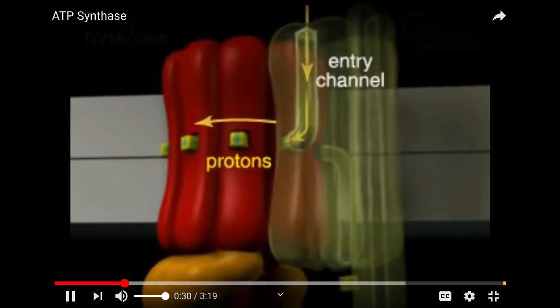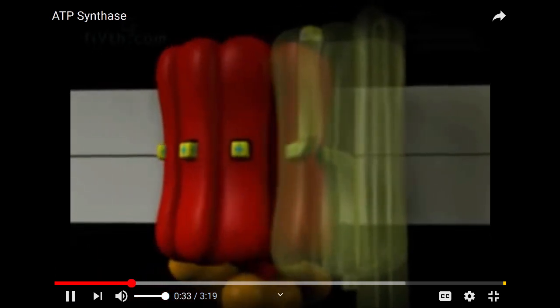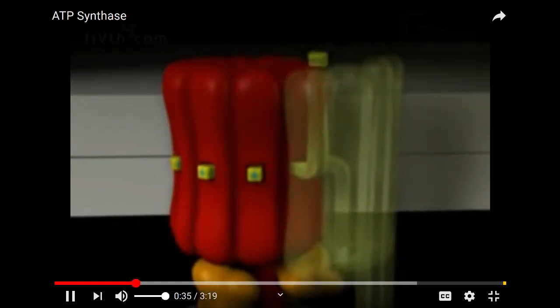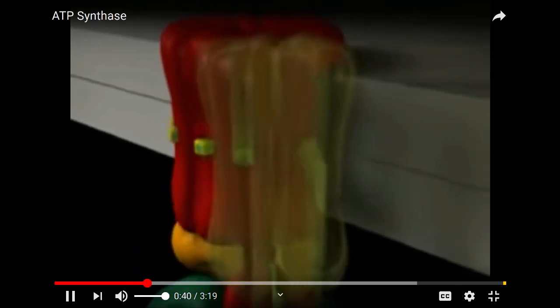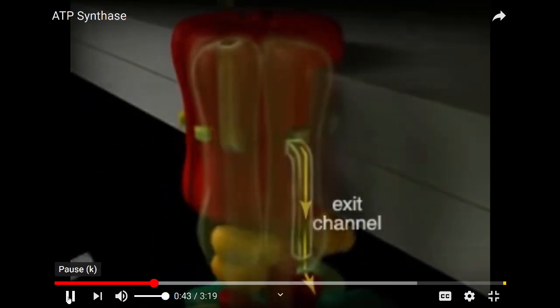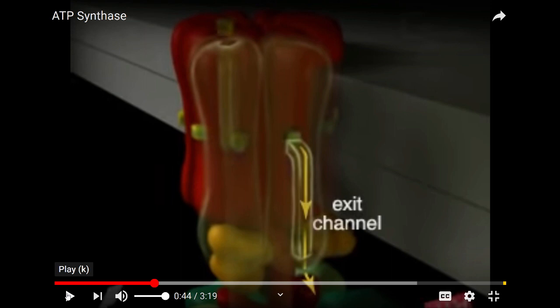You can follow one proton around until it gets all the way out here, and then there's this exit channel. When that C subunit comes all the way around to the inside half channel, the chemistry is such that the pH is higher on the inside — it will be deprotonated and go down. That will further the conformational change that's driving this C ring movement.